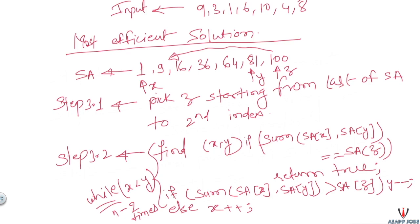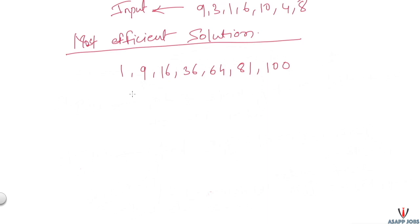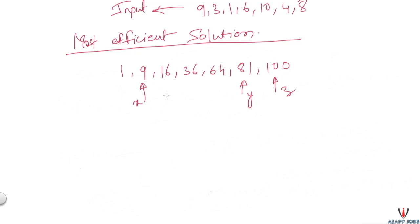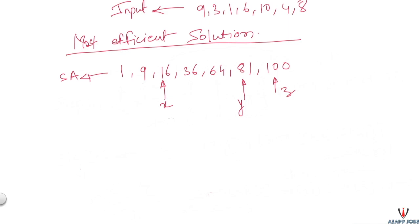Let's execute this algorithm on the squared array to find a triplet. Initially, z points to 100, x points to 1, and y points to 81. Adding x and y gives 82, which is less than 100, so we increment x. Now x points to 9; sum is 90, still less than 100, so increment x again. Now x points to 16; 16 + 81 = 97, still less than 100, so we increment x once more to 36.